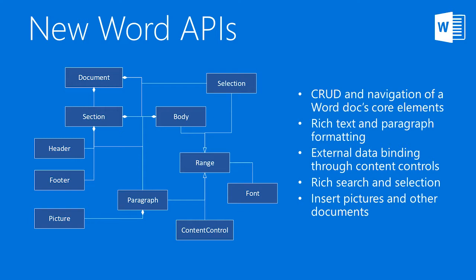The body object represents the main content of the document or section and provides access to the paragraphs and content controls collections. For those not very familiar with content controls in Word, this is a critical component in Word programmability and enables developers to refer to placeholders or locations in a document to read and write content. Most objects contain a range definition, meaning a continuous area in a document. The range can be used for inserting and reading content in many formats, as well as formatting text. Using the range font object, developers can implement rich text formatting like bold, italics, underlines, color highlighting, and changing the font by specifying a font name or a specific pre-shipped style.